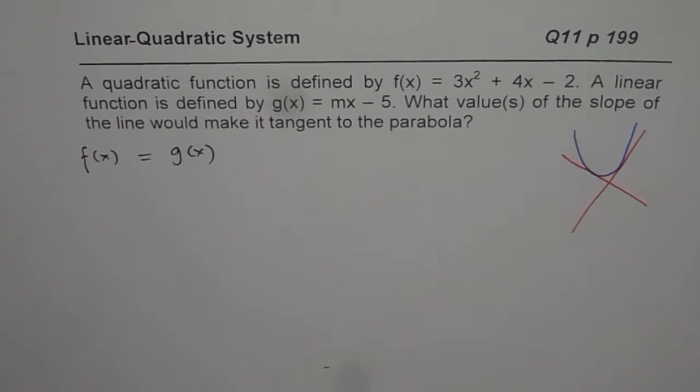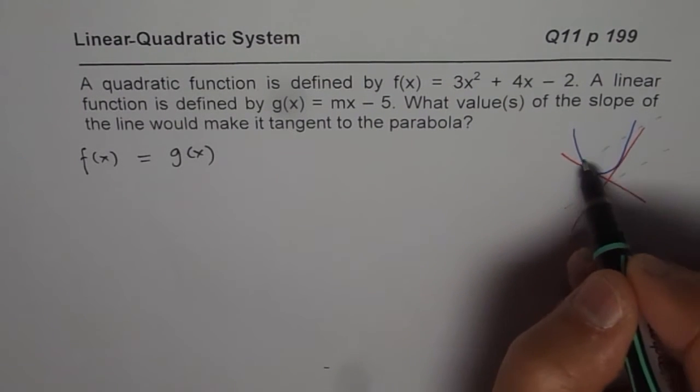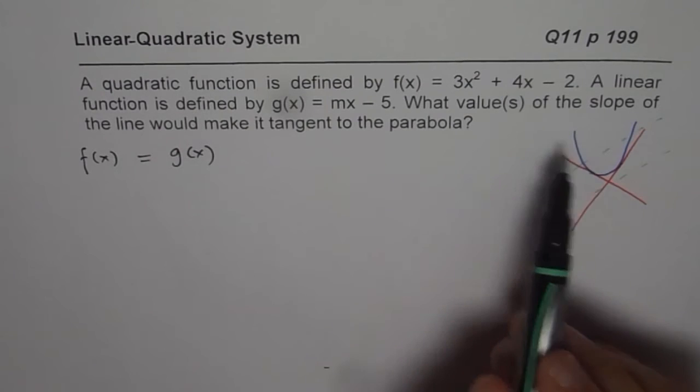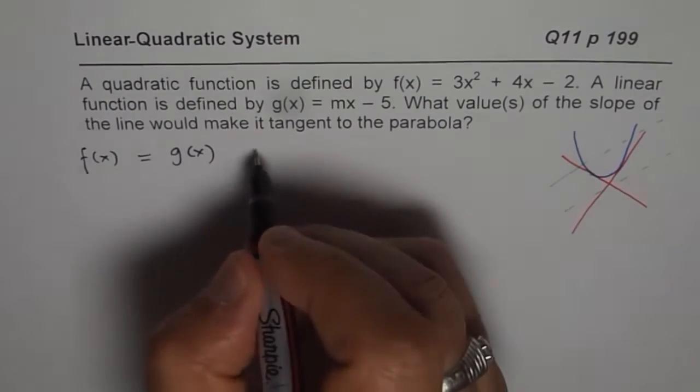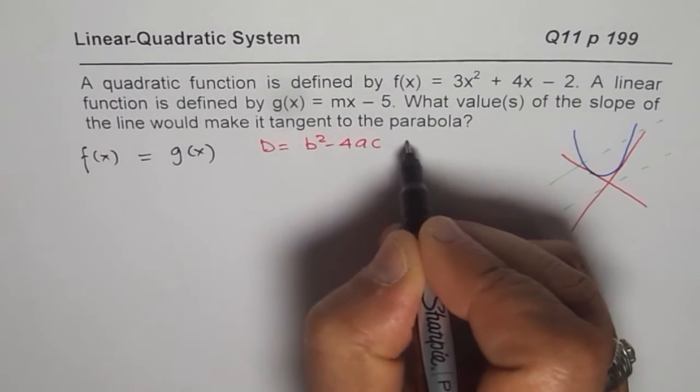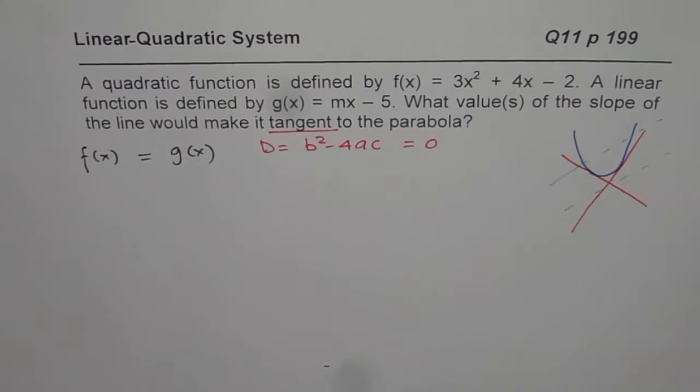Now that could be in many different ways. It may or may not intersect, or it may intersect in two places or like we are saying tangent. In this particular case, we want to find when are they tangent. That means at one point and that should happen only when the discriminant d which is b square minus 4ac should be equal to 0.